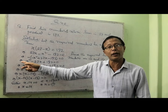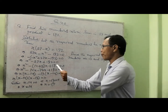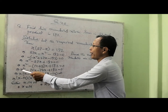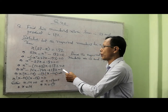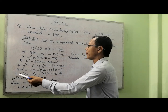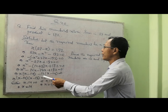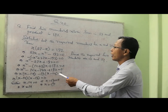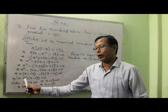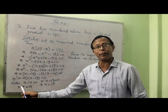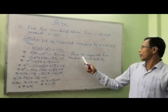We follow the middle term factorization: x squared minus (14 plus 13)x plus 182 equal to 0, which becomes x squared minus 14x minus 13x plus 182 equal to 0. Taking x common from the first two terms gives x(x minus 14), and taking 13 common from the next two terms gives 13(x minus 14) equal to 0. So (x minus 14)(x minus 13) equal to 0. Either x equal to 14 or x equal to 13. The required two numbers are 13 and 14.